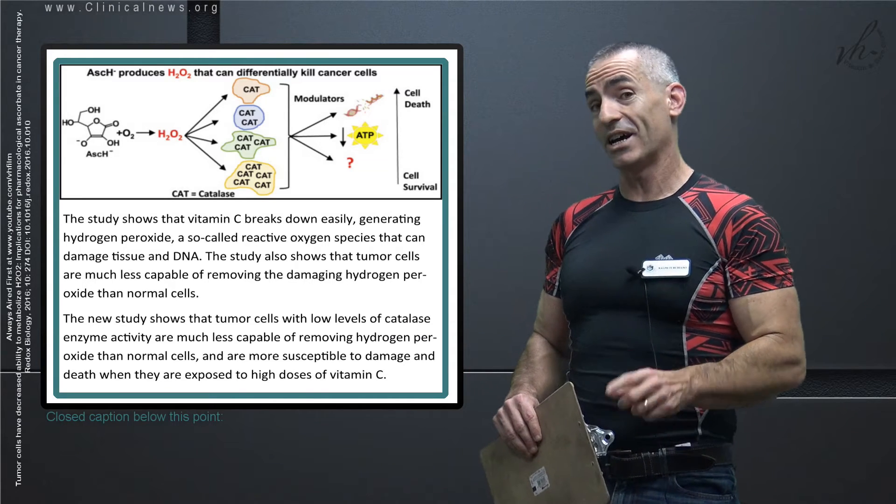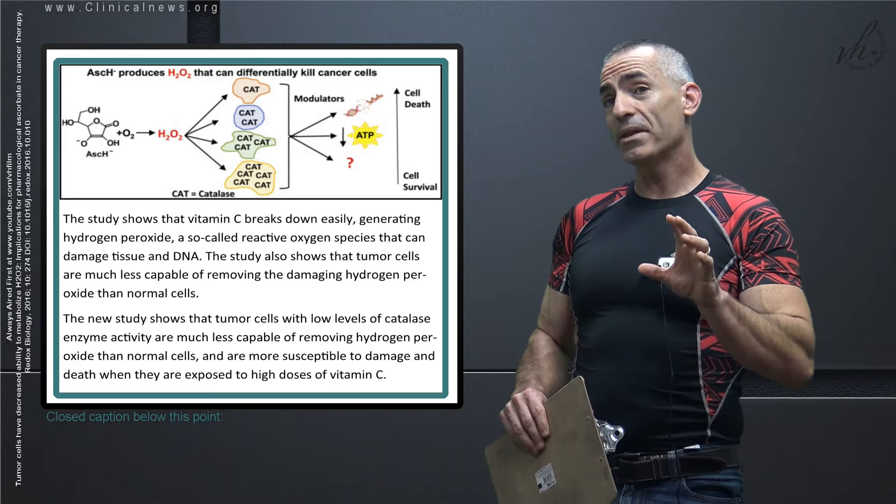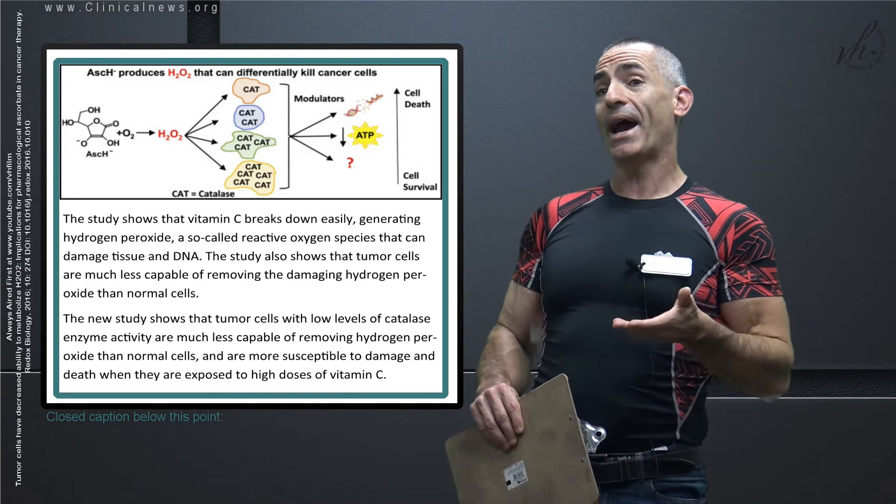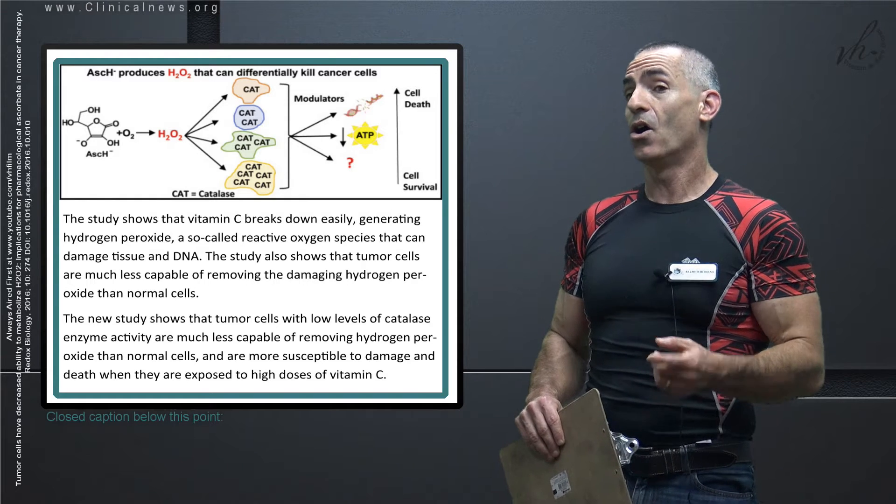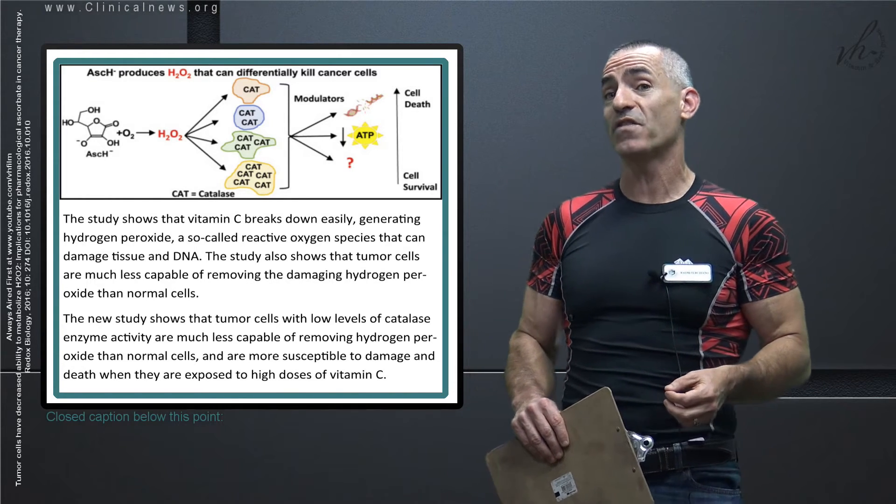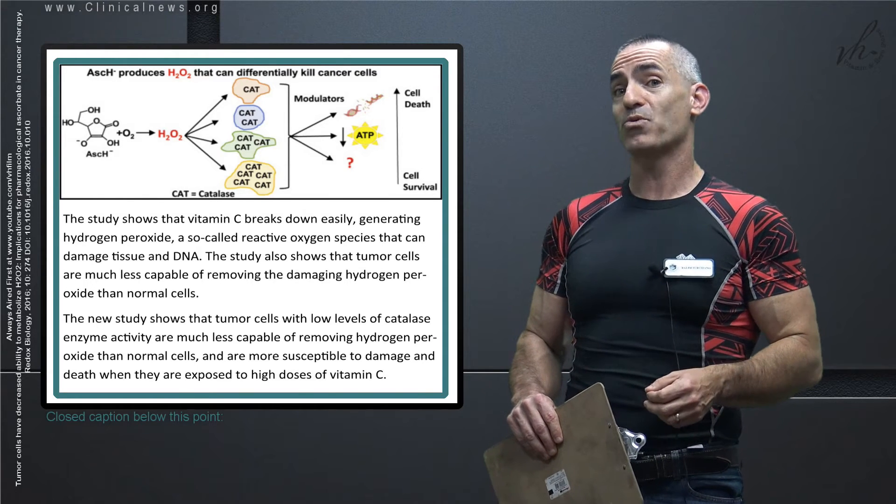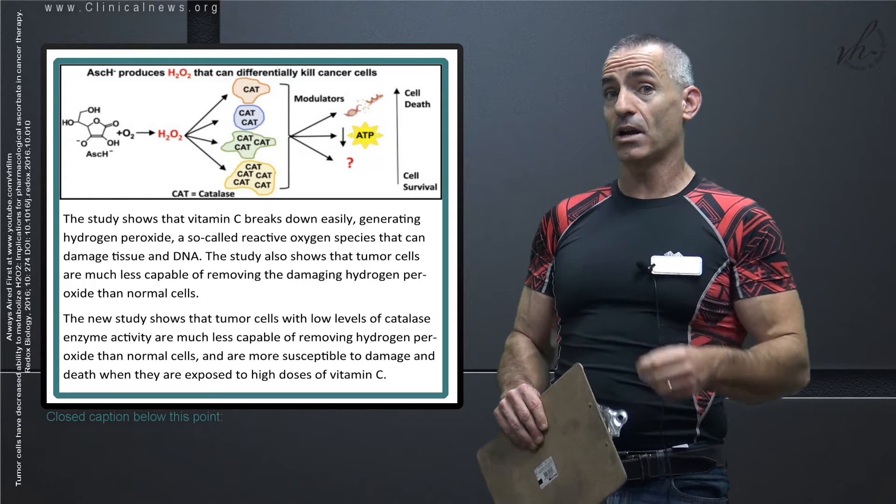The study also shows that tumor cells, now here's the caveat, normal cells normally have higher levels of this enzyme called catalase which can easily break down high levels of hydrogen peroxide, albeit a lot of cancer cell lines cannot produce large amounts of catalase to handle hydrogen peroxide, therefore being damaged one way or the other and falling apart.